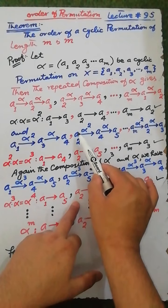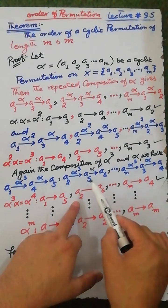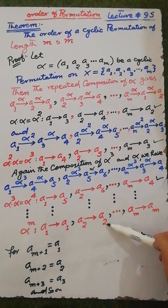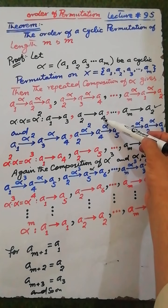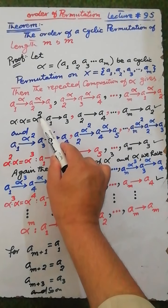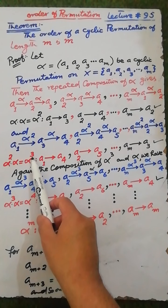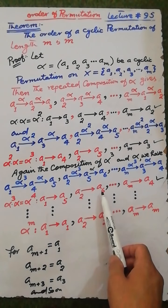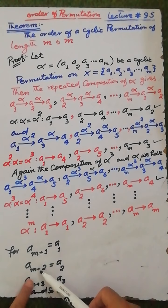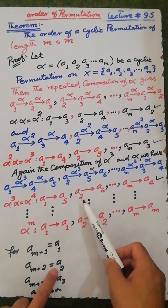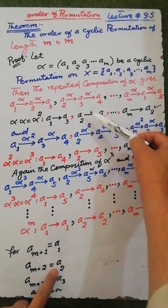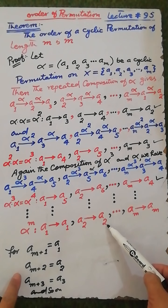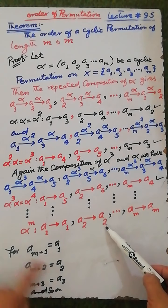In the calculation of alpha squared, a2 maps to a4; in alpha cubed, a2 maps to a5; in alpha to the fourth, a2 maps to a6. Adding 2 to each power: 2+2=4, 2+3=5, 2+4=6. Therefore adding 2 to m gives a(m+2), and a(m+2) equals a2. So a2 is fixed in the last step and maps to a(m+2), which equals a2.